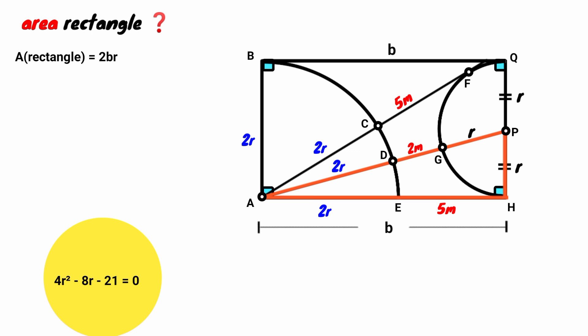This is a quadratic equation. We solve by factorization. Minus 8R can be written as minus 14R plus 6R. From 4R squared minus 14R, we can factor out 2R. So it is 2R into bracket 2R minus 7, plus 3 into 2R minus 7. 2R minus 7 is common. We factor it out. So it is going to be 2R minus 7 multiplied by 2R plus 3.